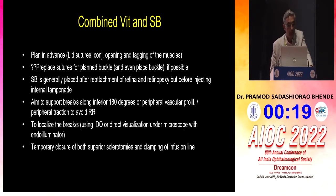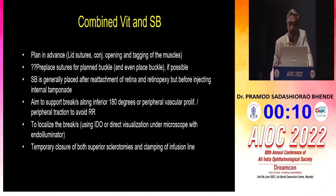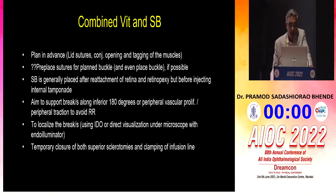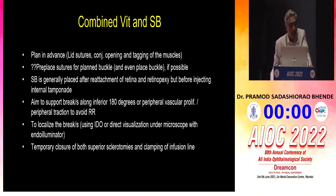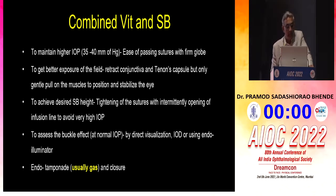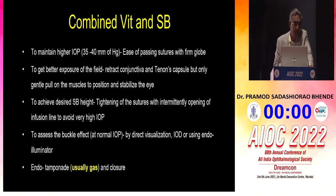So plan in advance — place sutures for the planned buckle if possible. The scleral buckle is generally placed after you achieve reattachment of the retina and retinopexy, but before injecting internal tamponade. Aim to support breaks along the inferior 180 degrees, or peripheral avascular zones, or associated peripheral traction to avoid relaxing retinotomy. Before placing the suture, you can temporarily close sclerotomies, clamp the infusion line, and increase IOP to around 35-40 so the eyeball is firm and easy to pass sutures. To get better exposure, retract conjunctiva and Tenon's capsule, but just gently rotate the globe to avoid distortion.